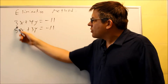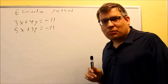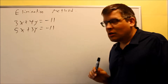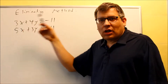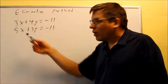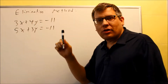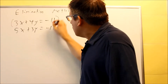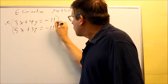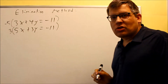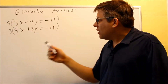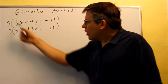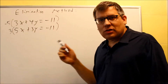To eliminate the x's, I look at the two coefficients of x and find their least common multiple. The smallest number both 3 and 5 go into evenly is 15. I want to make one of the x terms positive 15x and the other negative 15x so they cancel when I add the equations. So I'll multiply one equation by negative 5 and the other by positive 3. One of them has to be negative — you don't want both negative because then the variable won't cancel.